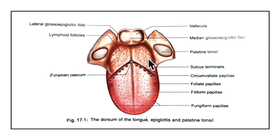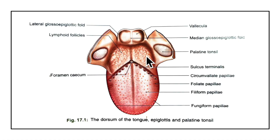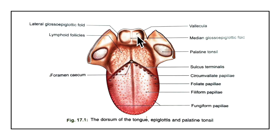The pharyngeal or lymphoid part of the tongue lies behind the sulcus terminalis. Its posterior surface, sometimes called the base of the tongue, forms the anterior wall of the oropharynx. The mucous membrane here has no papillae but has many lymphoid follicles that collectively constitute the lingual tonsil. Mucous glands are also present. The posterior-most part of the tongue is connected to the epiglottis by three folds of mucous membrane: the median glossoepiglottic fold and the right and left lateral glossoepiglottic folds. On either side of the median glossoepiglottic fold there is a depression called the vallecula.